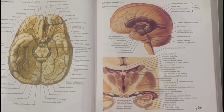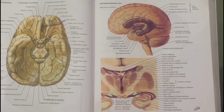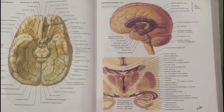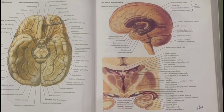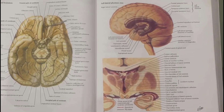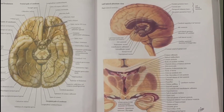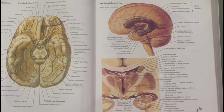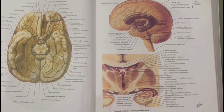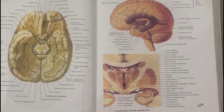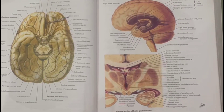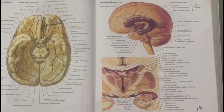In this video, we are going to study ventricles of the brain. There are four ventricles in the brain: two lateral ventricles, a third ventricle, and a fourth ventricle. Ventricles are basically concerned with the production and transport of CSF.